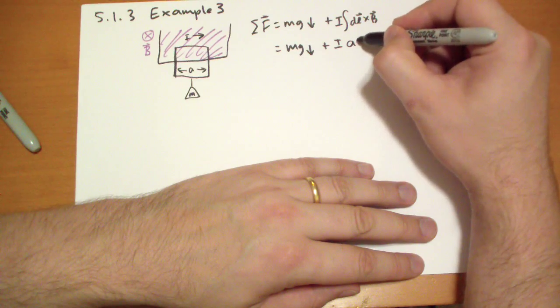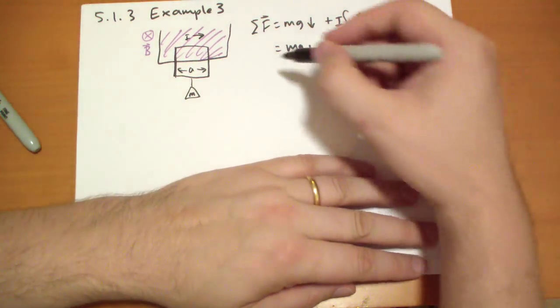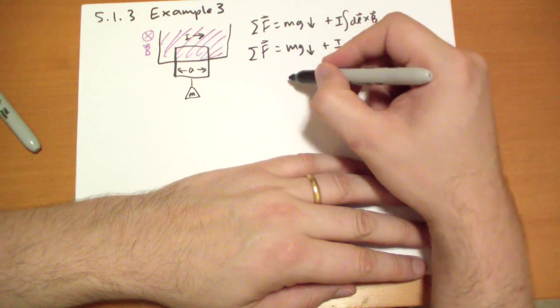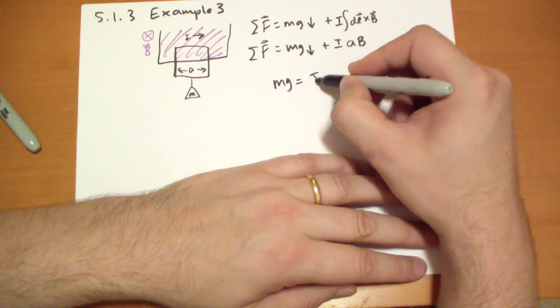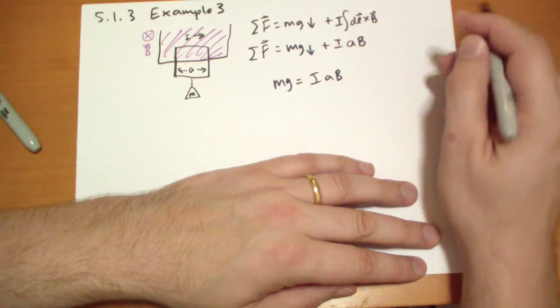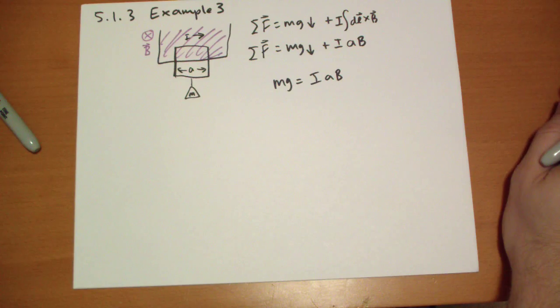And the length is just A, B. So if we want the net force to be zero, then we have to equate these two. So Mg has to equal I times A times B. One's pointing down, one's pointing up.